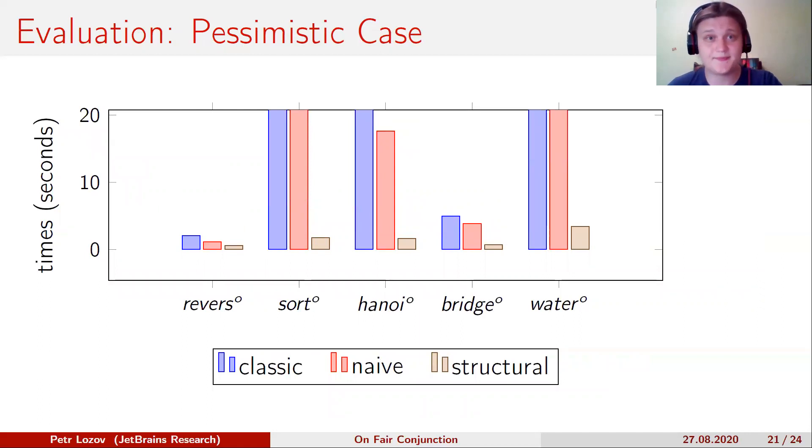Okay, let's talk about the pessimistic case. First of all, if the column reached the top, then this benchmark didn't complete in five minutes. In the pessimistic case, left-biased conjunction and even naive fair conjunction slow down dramatically. Here, here, and here. At the same time, fair conjunction demonstrates comparable performance to the optimistic case.